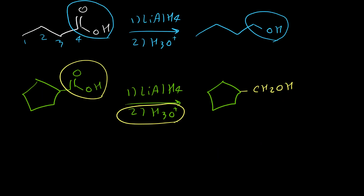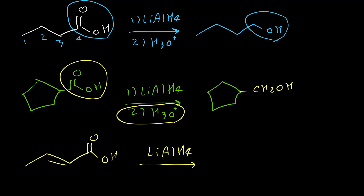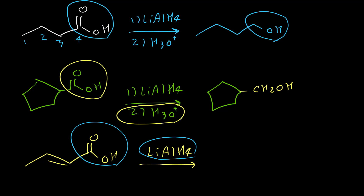The last example for carboxylic acid: I'll just write lithium aluminum hydride but assume there is a second step. Importantly, LiAlH4 does not reduce carbon-carbon double bonds — it has no effect on C=C. So when converting the carboxylic acid functional group, the double bond remains unchanged, and only the carboxylic acid converts to a primary alcohol.